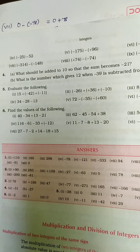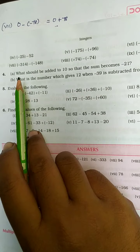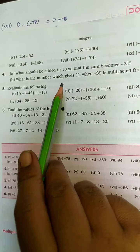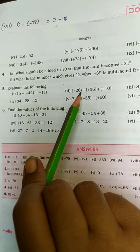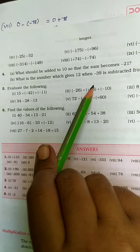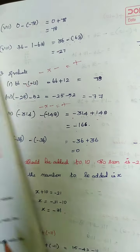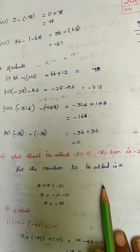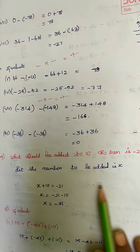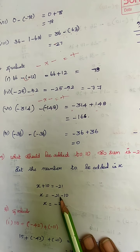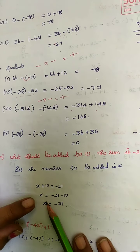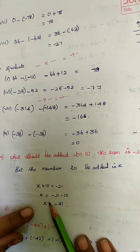Good afternoon children. We have completed up to problem number 3 and we are going to learn problem number 4a. What should be added to 10 so that the sum is minus 21? So we will be taking the number to be added as x. With x if you add 10 you will be getting minus 21. And we have to find the value of x.